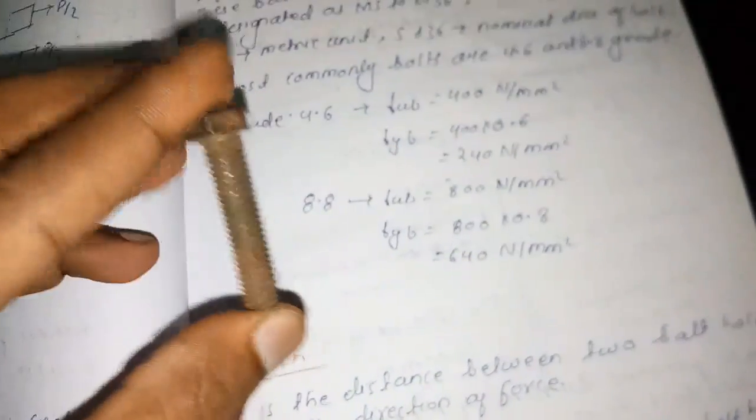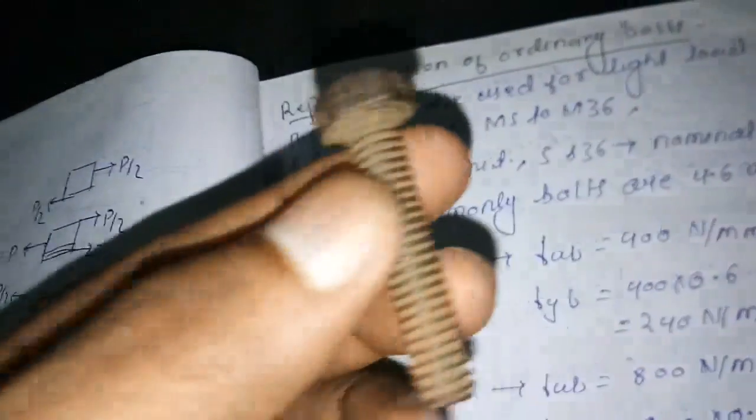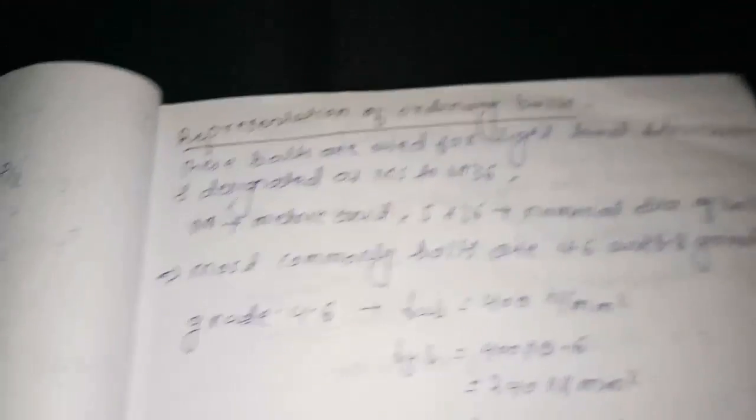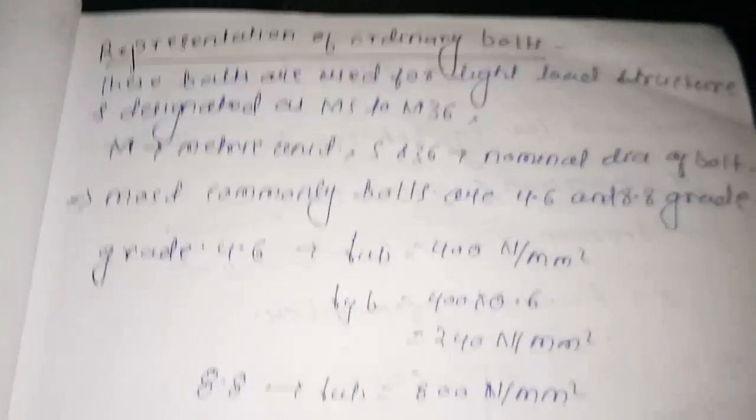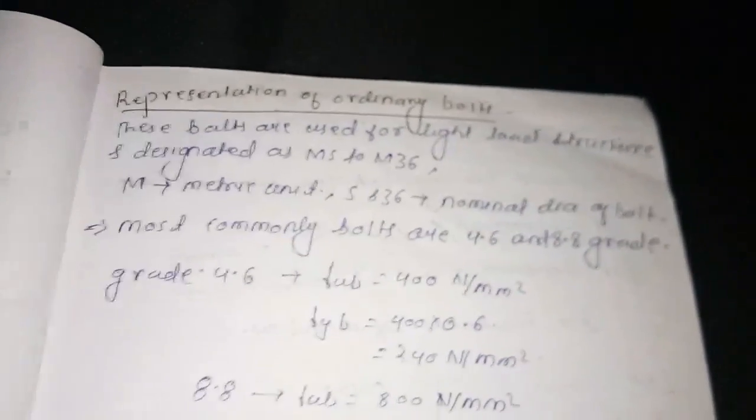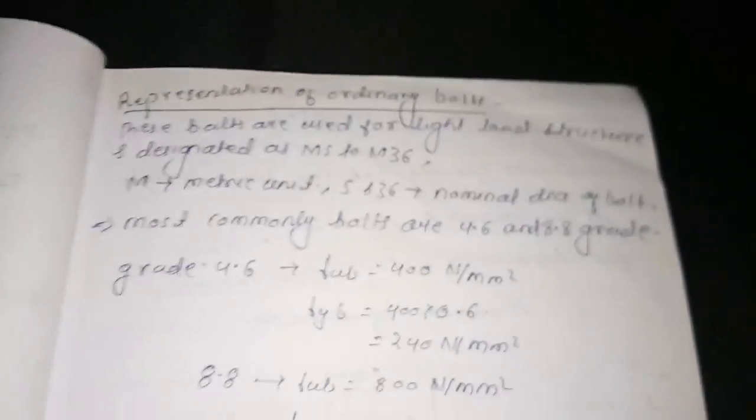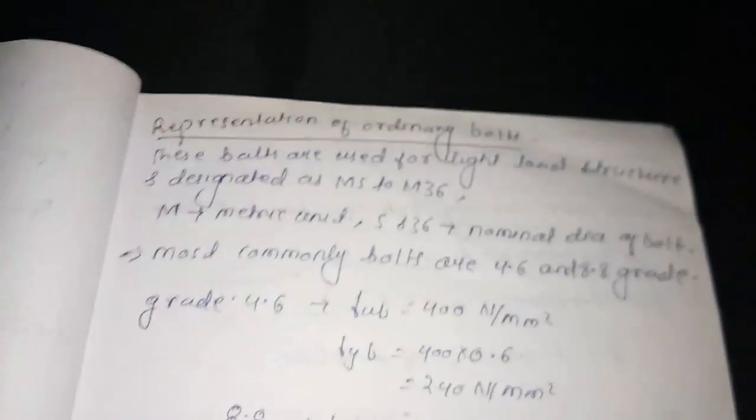Now let's discuss the grade of the bolt. The bolt in my hand is an ordinary bolt, also called a black bolt. There is also a high-strength friction grip bolt (HSFG), which we will study in detail in steel engineering. Ordinary bolts are used for light load structures where loading is not too high.